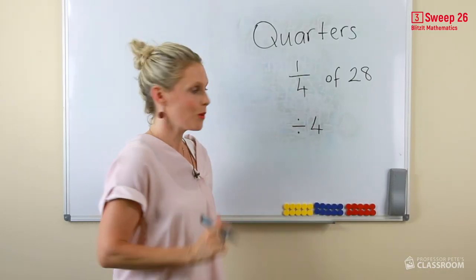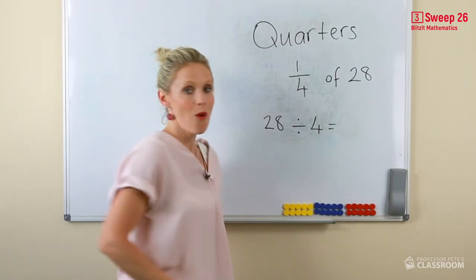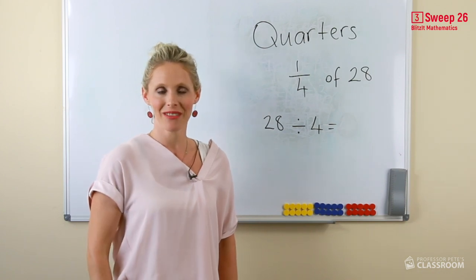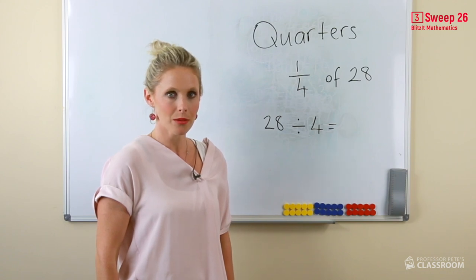Well we know that 28 divided by 4 is a part of a fact family. So 4 multiplied by what equals 28?